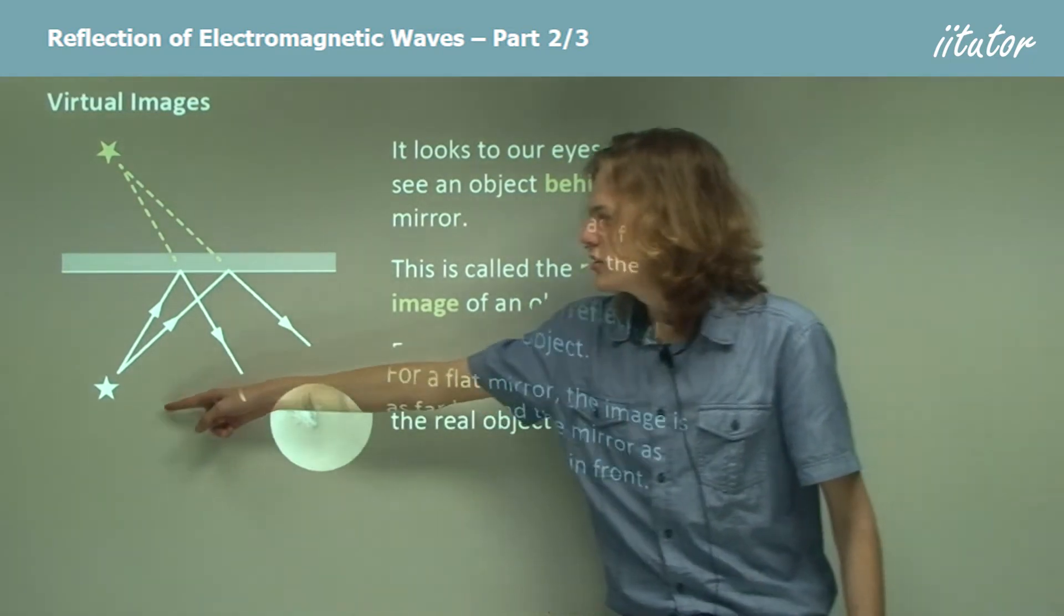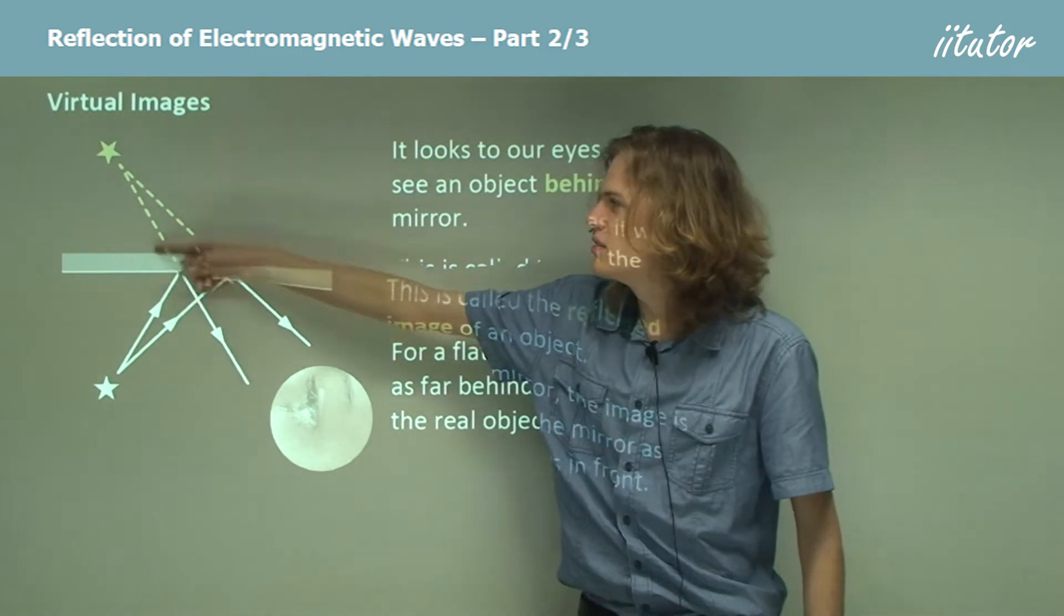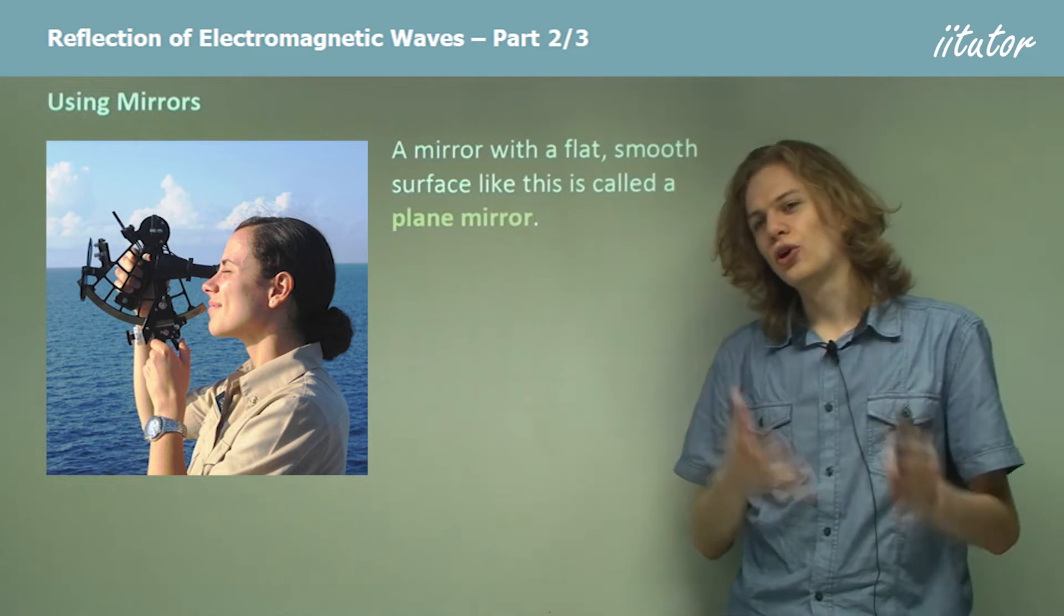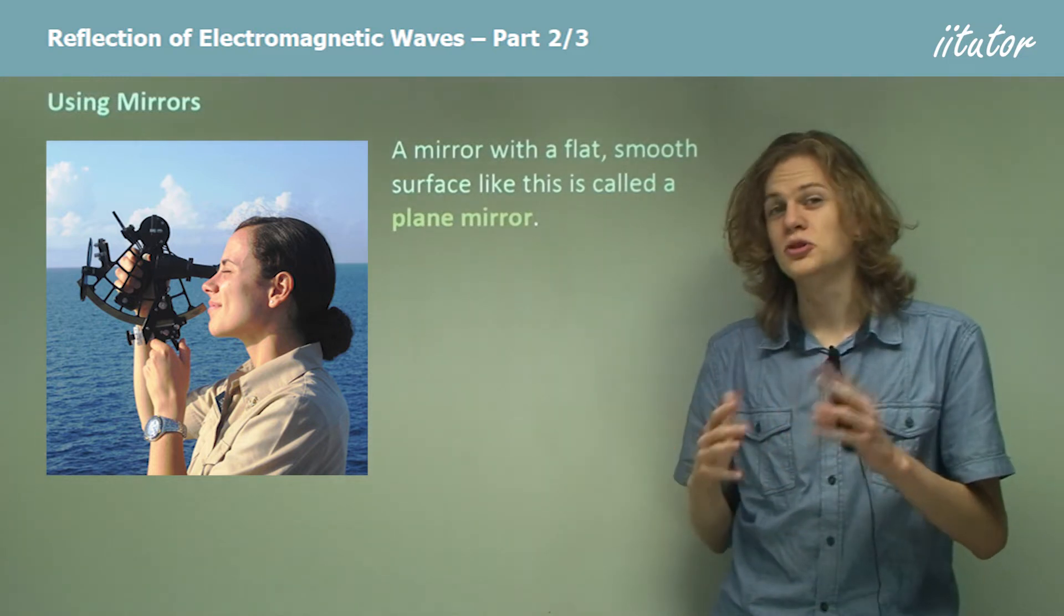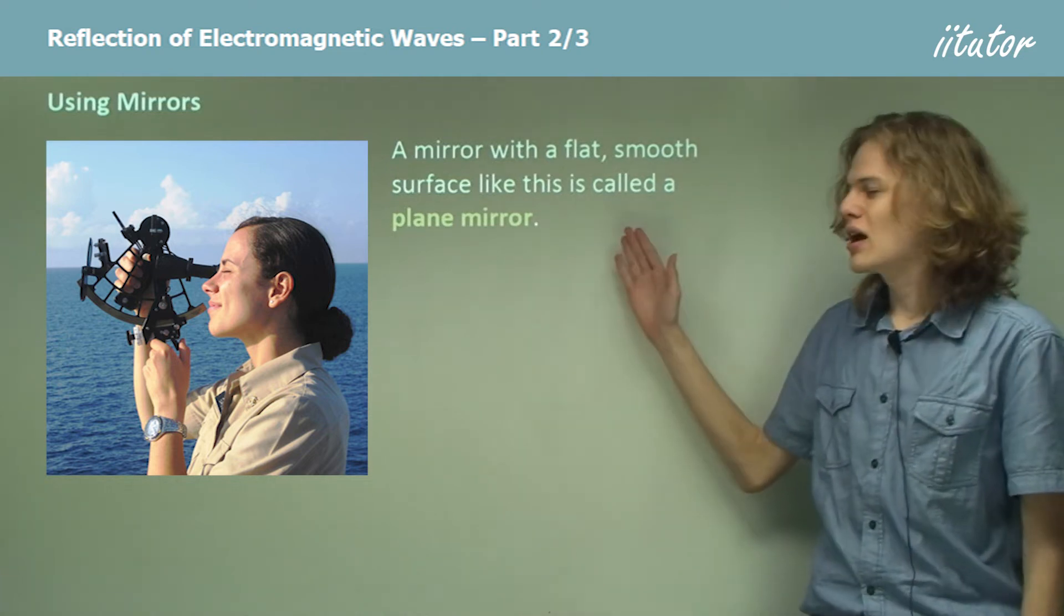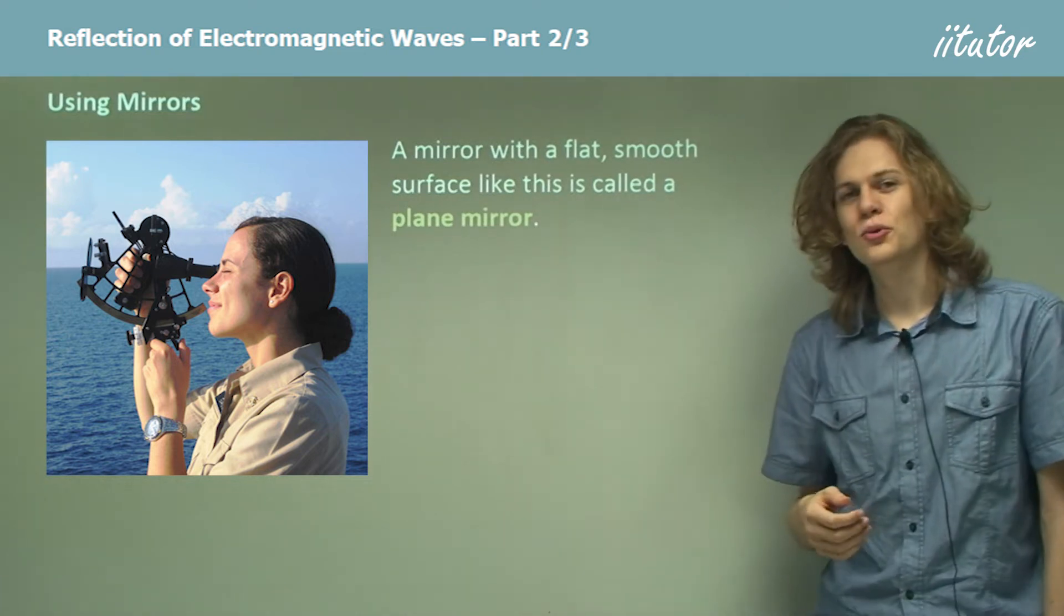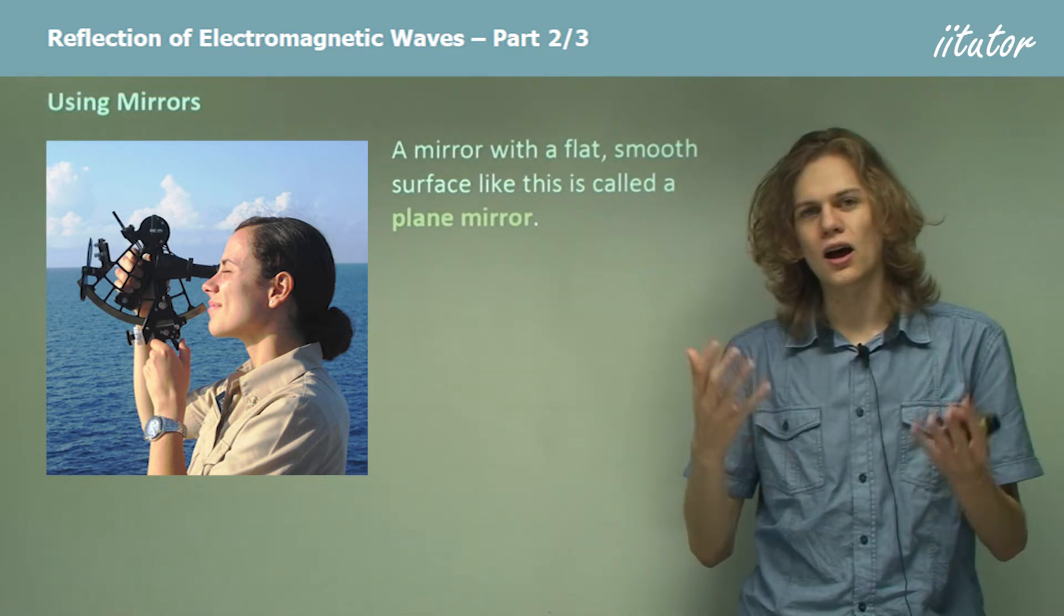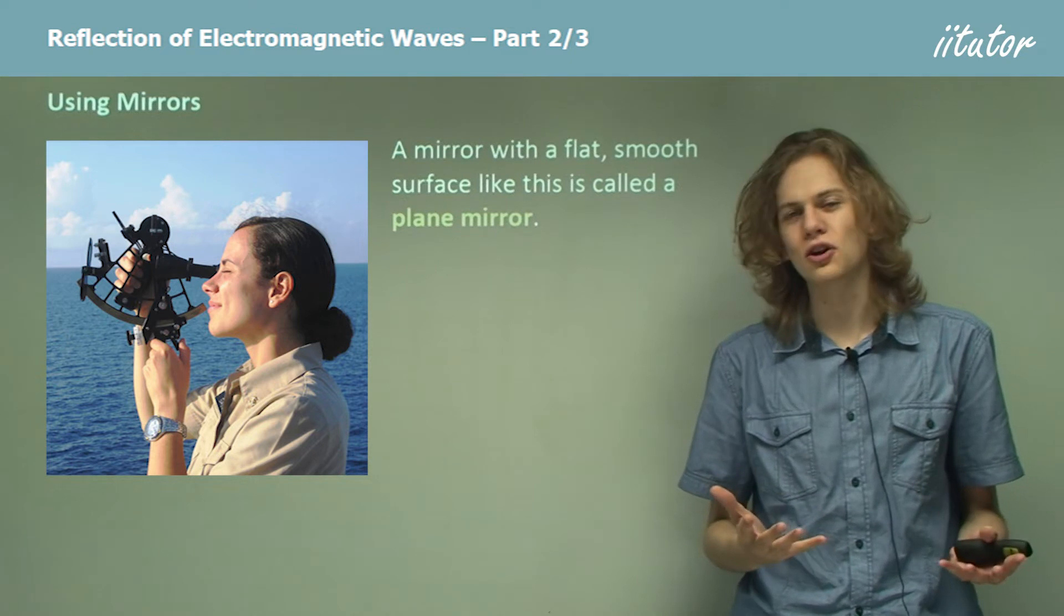That is, this distance is the same as this distance. Now if we have a totally flat smooth mirror, which I'm sure you'll agree is the easiest sort of mirror to deal with, then we have a plane mirror. The reason for this is because it's shaped like a plane. And we know from mathematics that a plane is a long flat surface that never curves.